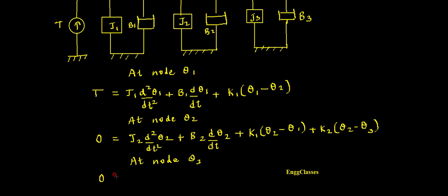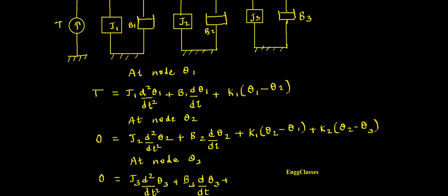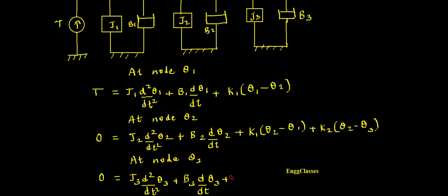At the last node theta3, the equation is: 0 = j3 · (d²θ3/dt²) plus b3 · (dθ3/dt) plus k2 · (θ3 − θ2). These are the three performance equations for the mechanical system.